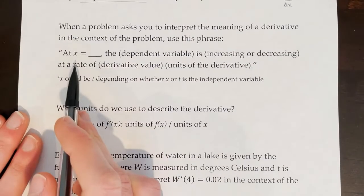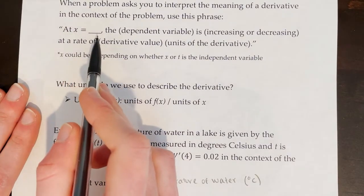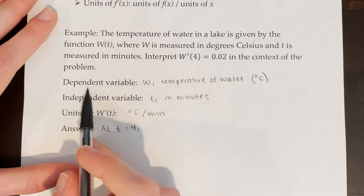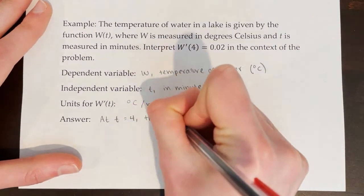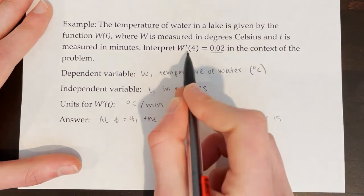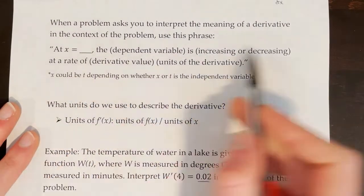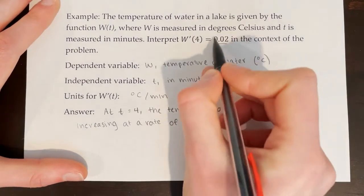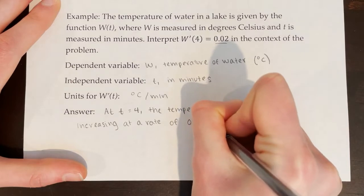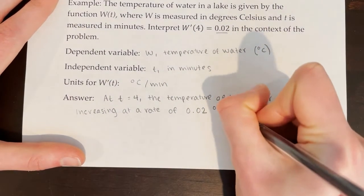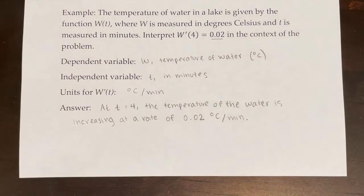Now we can come up with our answer using the phrase. First, we need to figure out at t is equal to what — they plugged in 4, so we say at t is equal to 4. Then the dependent variable is w, the temperature of the water. Since w'(4) is a positive number, the temperature of the water is increasing. We use the phrase 'at a rate of' — the rate is 0.02 — and we attach the units for the derivative, degrees Celsius per minute. So our final answer is: at t is equal to 4, the temperature of the water is increasing at a rate of 0.02 degrees Celsius per minute.